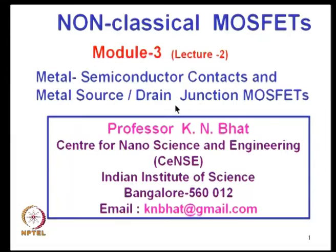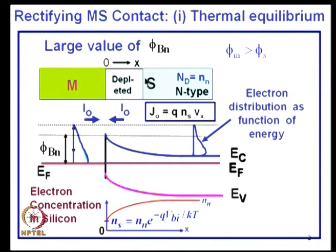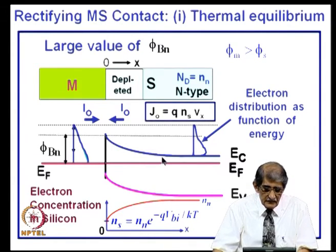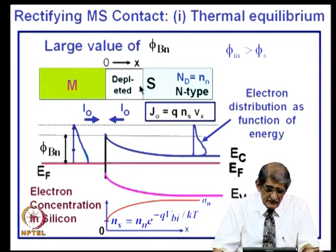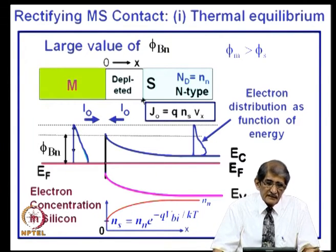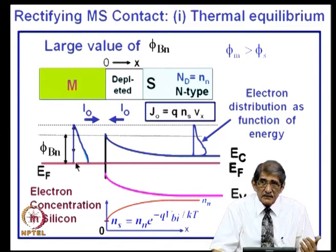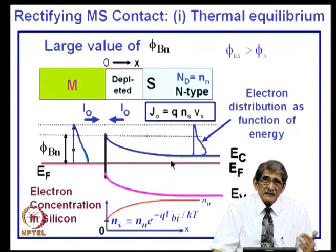We continue our discussion on metal-semiconductor contacts and metal source-drain junction MOSFETs. Last time we discussed the principle of operation of a metal-semiconductor contact where the work function of the metal is greater than that of the semiconductor. At thermal equilibrium there is a depletion layer in the semiconductor with a negative charge on the metal side and a positive charge in the depletion layer, because electrons are transferred from the semiconductor to the metal since φ_m is larger. The Fermi level in the metal is below the Fermi level of the semiconductor, so electrons get transferred from semiconductor to the metal.